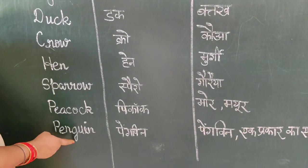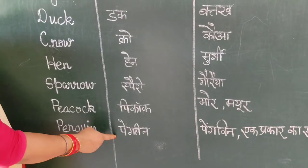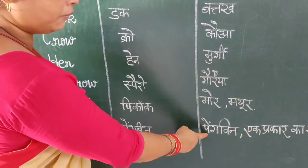P, E, N, G, U, I, N — PENGUIN. PENGUIN means table.